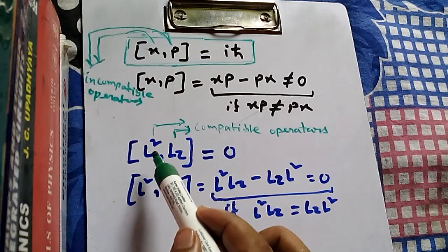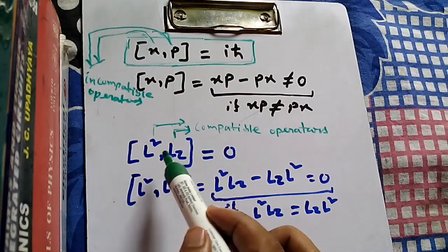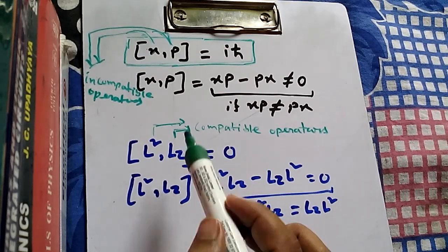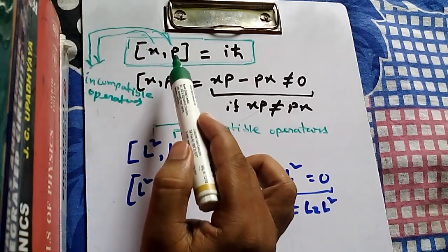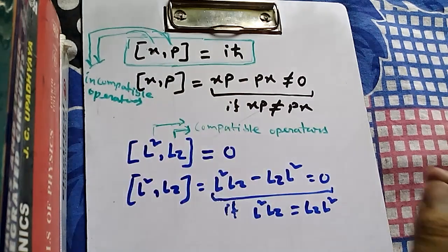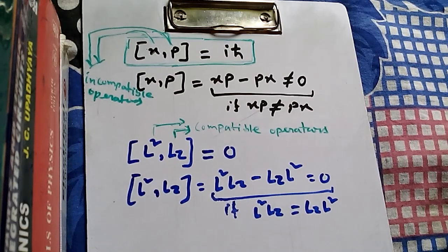So if the operators are compatible, it means they can be found simultaneously for a function. If the operators are incompatible, they cannot be found simultaneously. There are many sets of operators that are compatible and many that are incompatible, and you can understand what each case means.